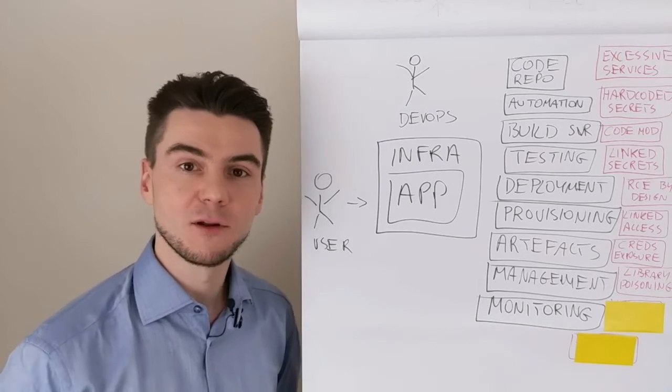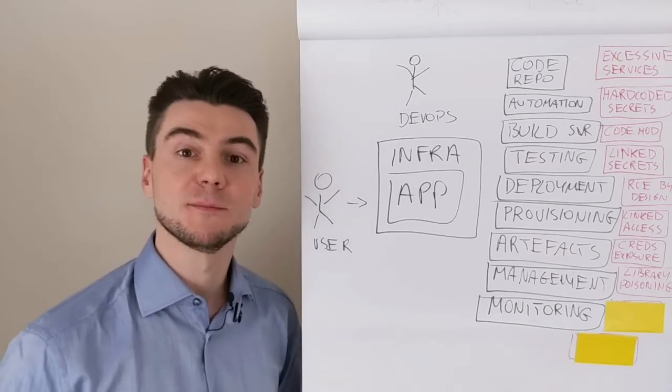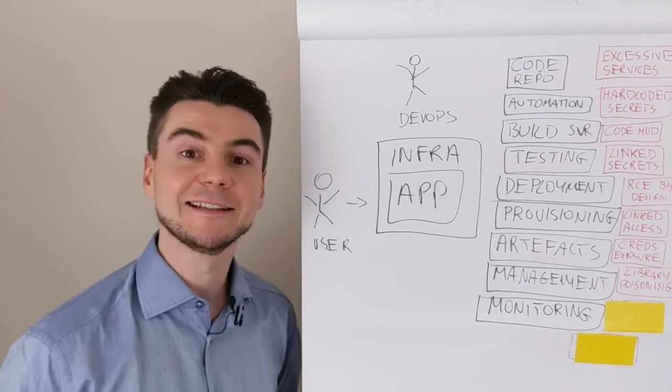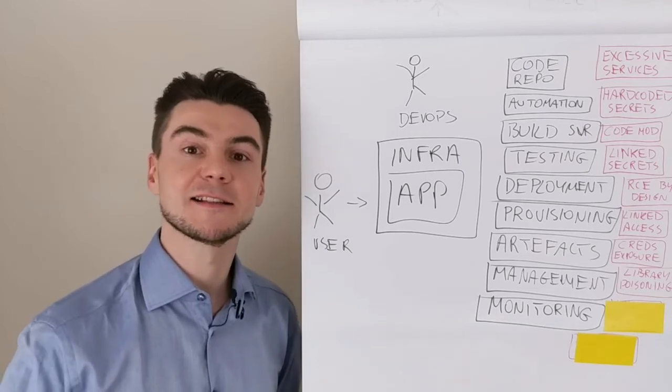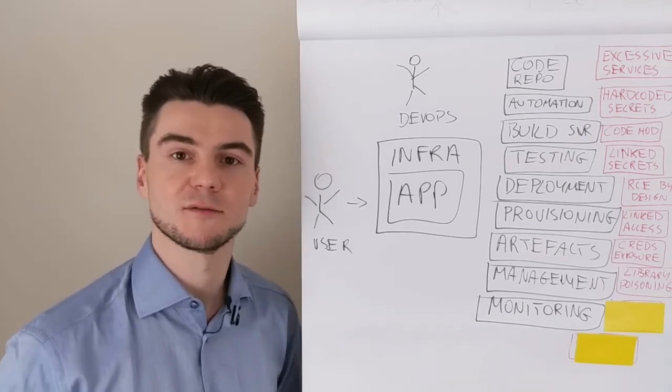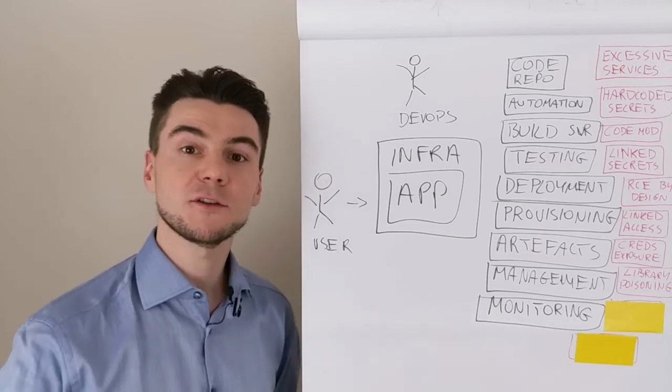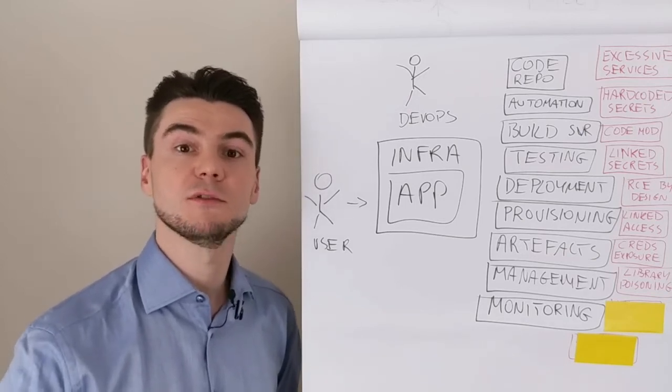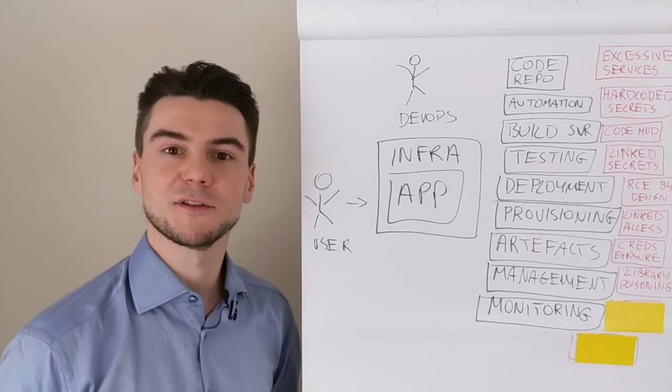There is a recent example of a bug bounty hunter that created malicious NPM libraries and named them exactly as the ones used by Microsoft, custom Microsoft libraries. And Microsoft, when pulling the code, they were actually using the malicious ones in the very first place.